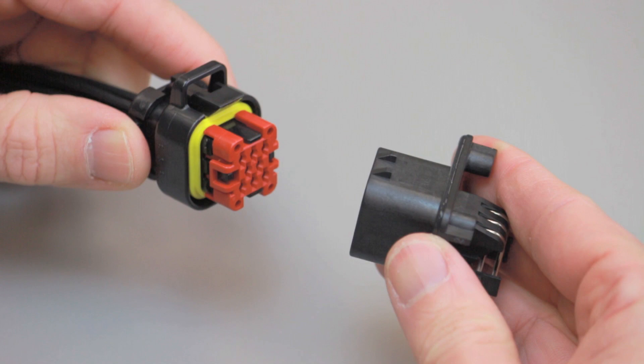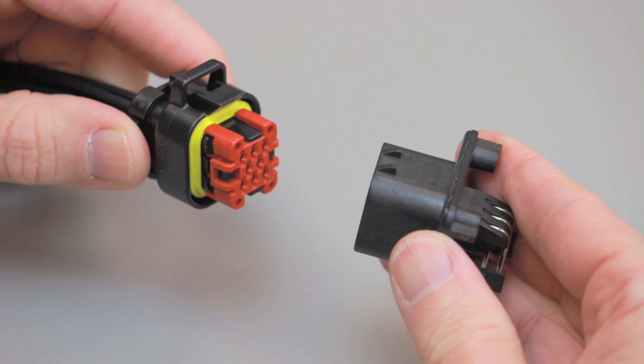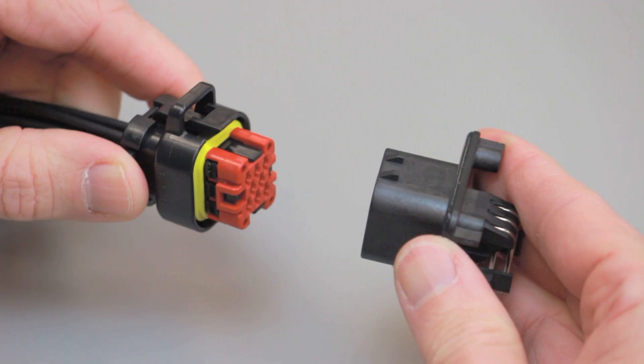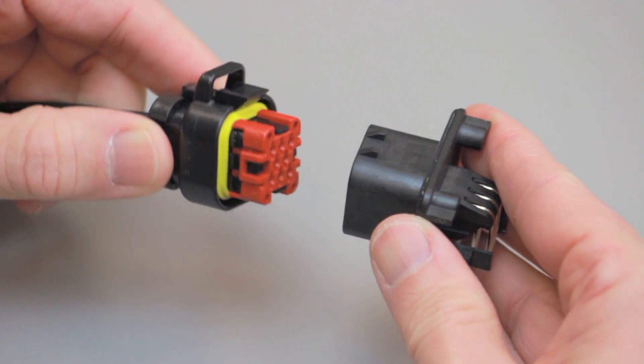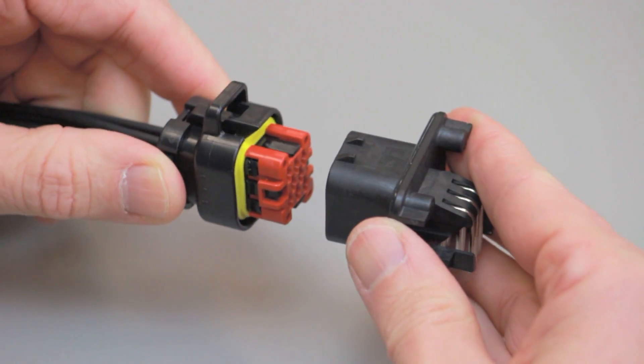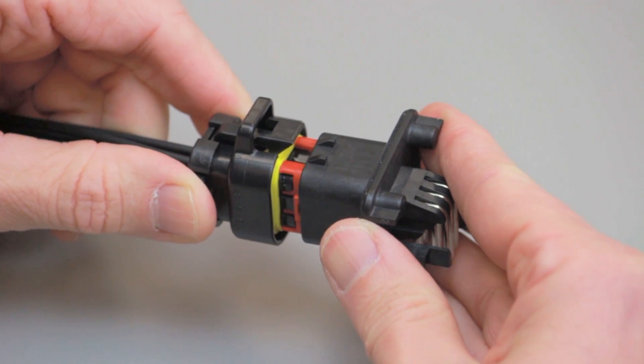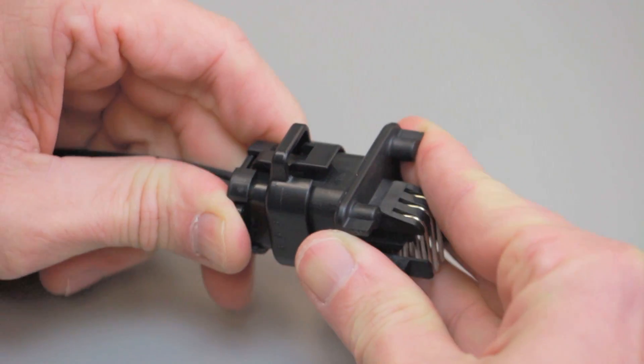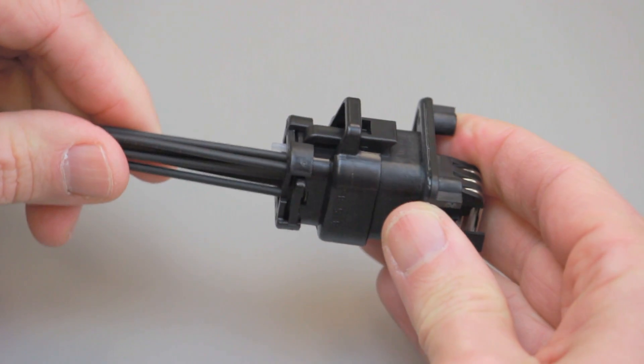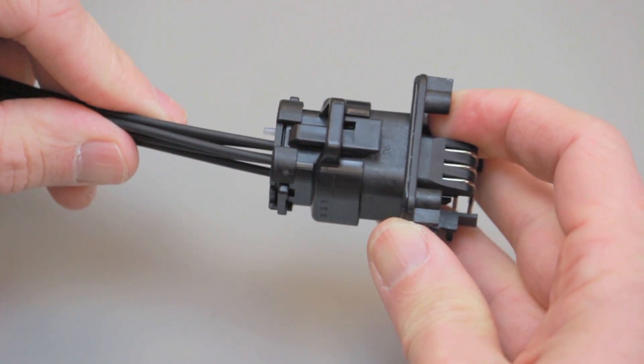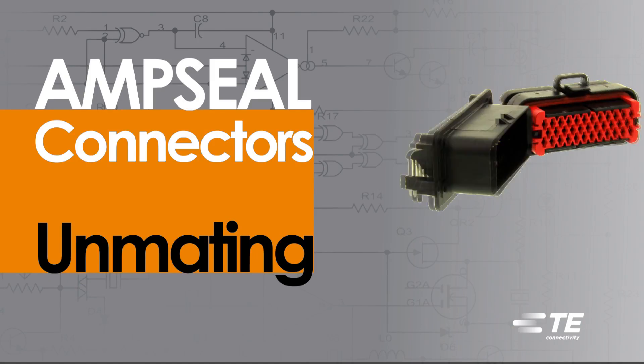AmpSeal Connector Mating. All AmpSeal connectors are designed to be mated and unmated by hand. When mating AmpSeal connectors, grasp the receptacle contact housing by the body and align it with the PCB header. Push the receptacle contact housing and PCB header together until you hear and feel a click.